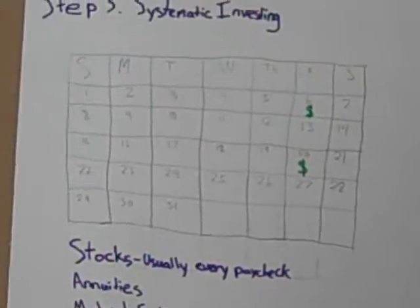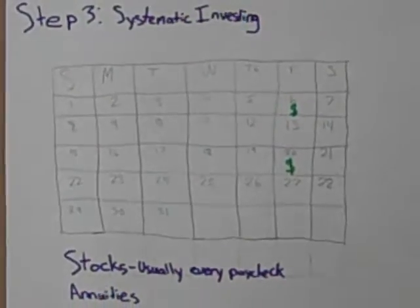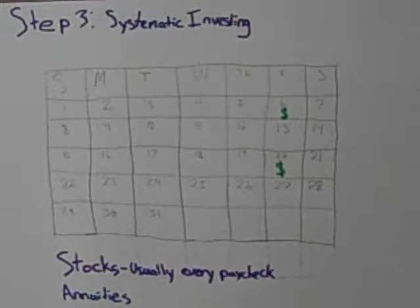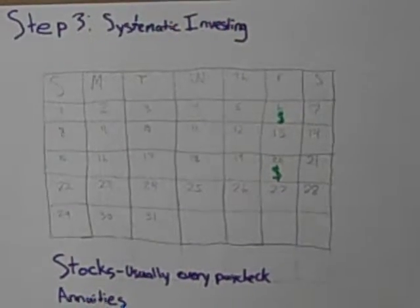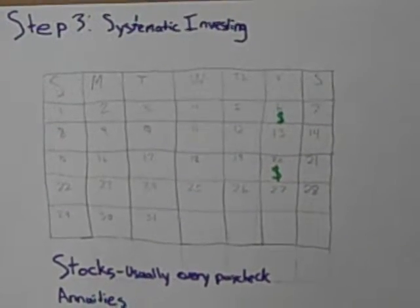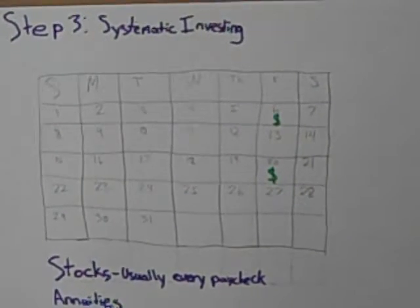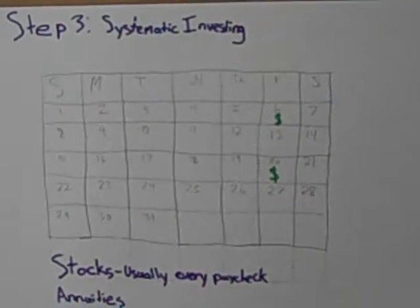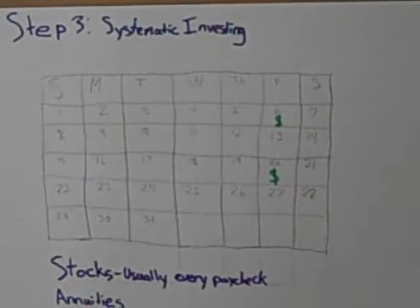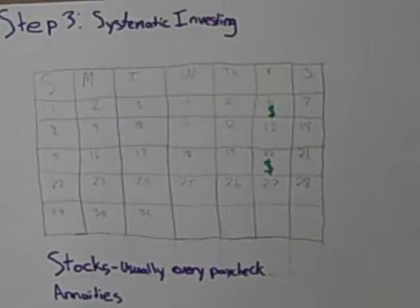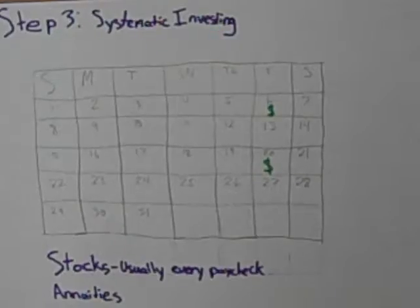Step three: systematic investing. This step is after the low risk investments. Usually these are medium risk investments, so then you have a higher return, but also a higher risk. People begin in their 30s or 40s.